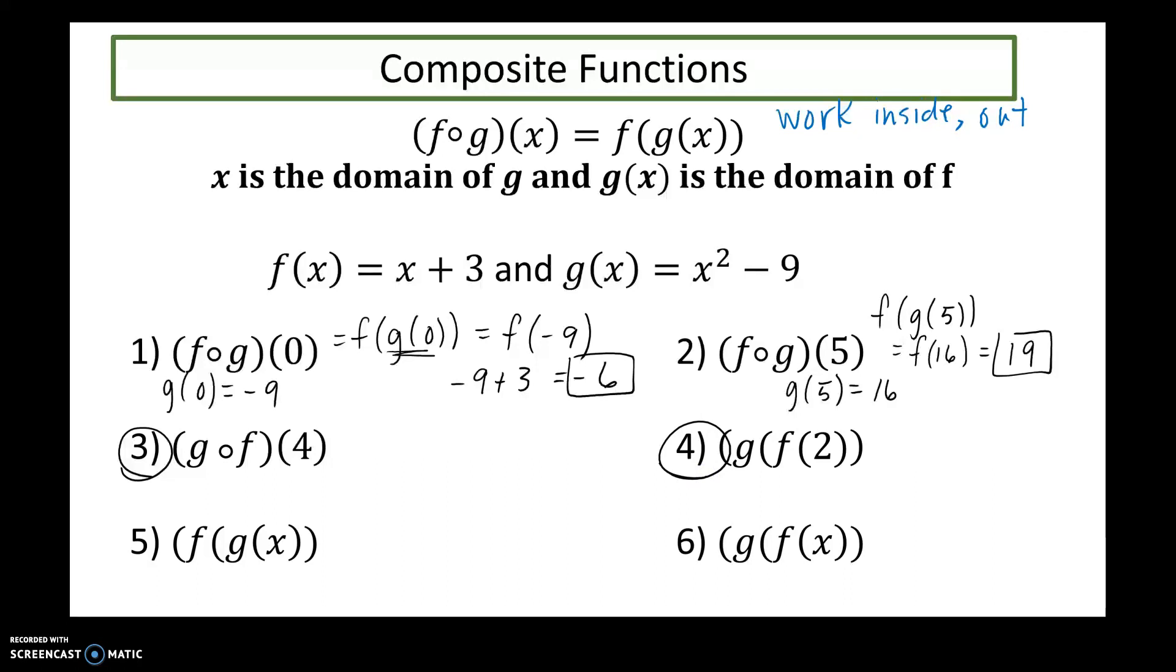I'm going to have you guys do numbers 3 and 4, so I can talk about 5 and 6. So notice in numbers 1 through 4, my input were numbers, so my output were numbers. Now when I look at 5 and 6, my inputs are still in terms of x, so my outputs are going to be in terms of x.